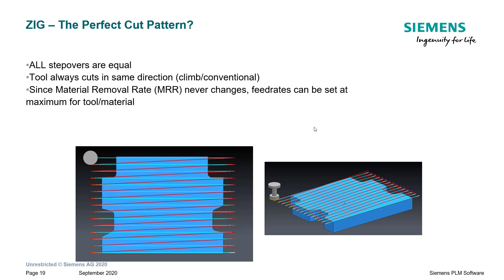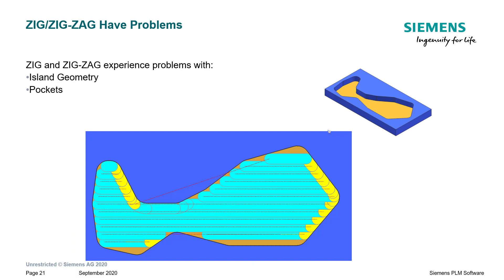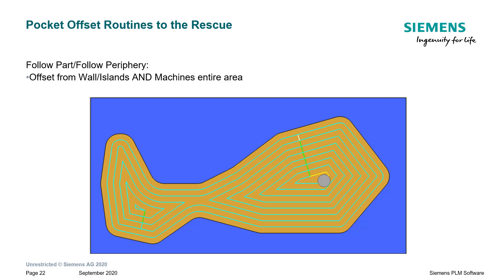Given what we know, zig is the perfect cut pattern: all the stepovers are equal, the tool always cuts in the same direction regardless of whether you've set it to climb or conventional, and since the material removal rate never changes, feed rates can be set at the maximum for that tool and material combination. However, both zig and its cousin zigzag have problems — what do we do with pockets that are irregularly shaped or island geometry? That's when we run into trouble. Toolpath scientists came up with the follow-part, follow-periphery cut pattern, which is an offset from the wall or any islands that machines the entire area.